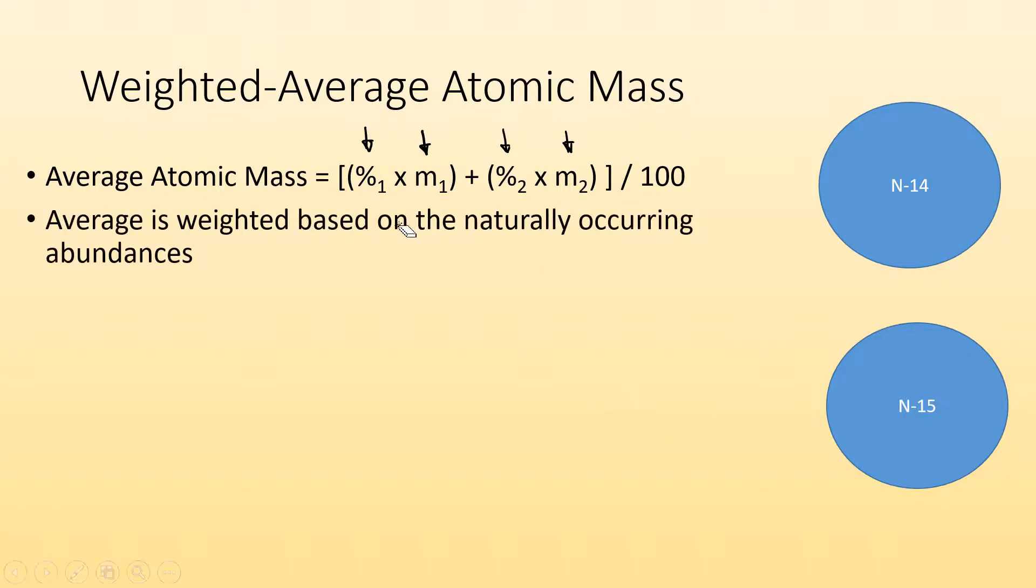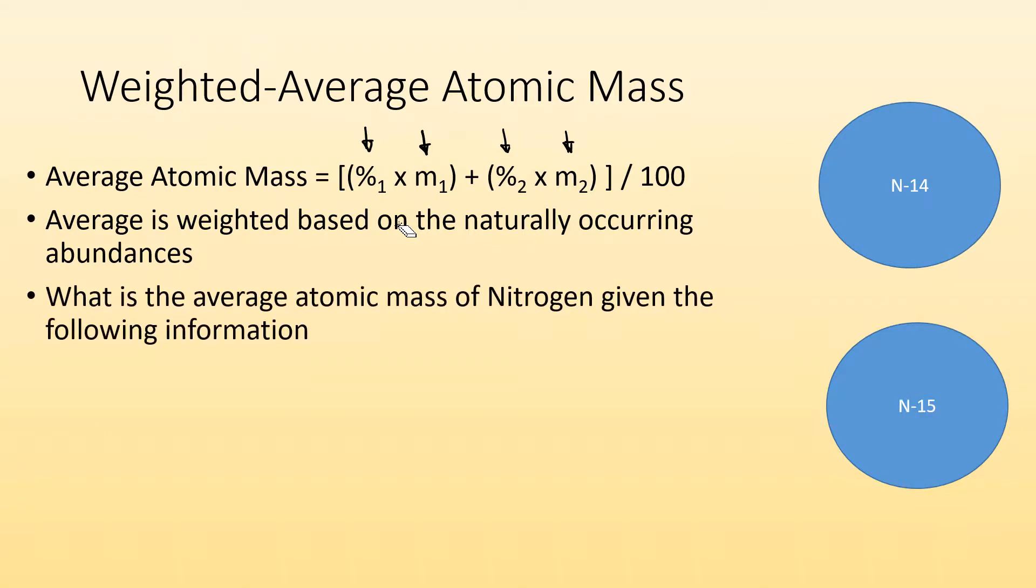So when we do the averages, we're going to only look at the naturally occurring abundances because there are some synthetic isotopes that we make. But most of the time we're not concerned with that because we're making those, you're not going to find them in nature. So what is the average atomic mass of nitrogen given the following information? We know that nitrogen 14 has this mass and 99.6% of all nitrogen is that isotope.